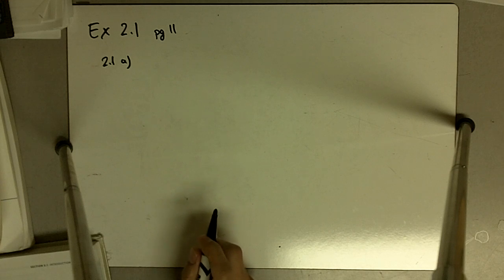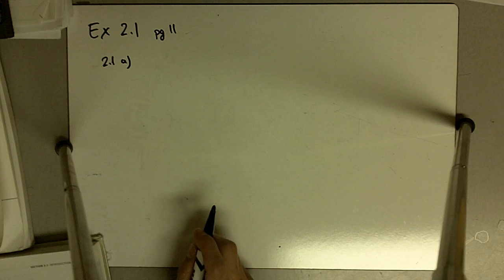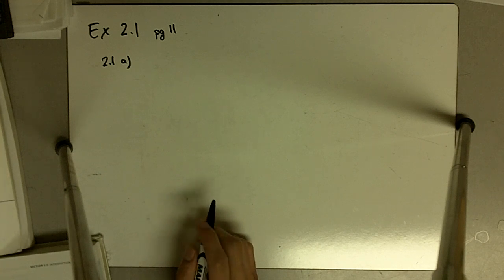So for 2.1 part A, it says a paleontologist measured the width in millimeters of the last upper molar in 36 specimens of the extinct animal Acropithecus rigidus.